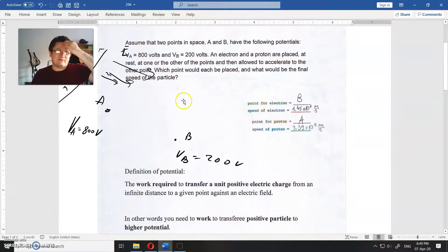Now let us find the speed of the particle. What will be the speed of the proton when it's moved from here to here? And what will be the speed of the electron when it's moved from here to here?